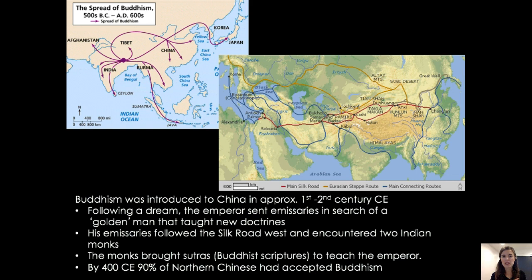His emissaries followed the Silk Road and encountered two Indian monks. The monks brought sutras — Buddhist scriptures — to teach the Emperor. In a relatively short amount of time, by 400 CE, about 90 percent of northern Chinese had accepted Buddhism. However, this always depended on the Emperor; some rejected it as a foreign religion while others were much more accepting. When Buddhism was worked into Chinese traditions of revering one's ancestors and family, and connected to Taoist or Confucian traditions, it was much more accepted. This localization is very true of Buddhism in China.